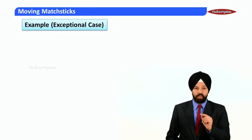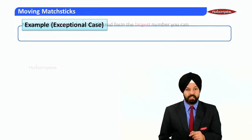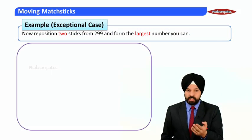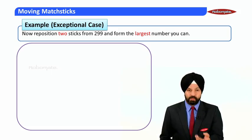Now we are moving to a very beautiful case, which is an exceptional case. We are again using the same number 299. The question says reposition two matchsticks and form the largest possible number.